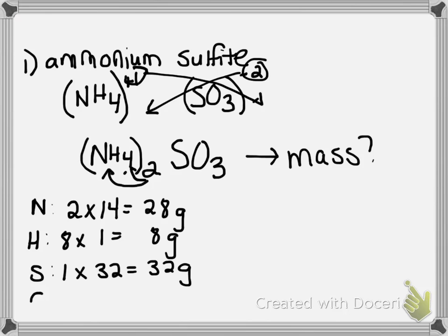And last but not least, oxygen. We have three oxygen atoms, and looking at the periodic table, oxygen has a mass of 16. So three times 16 will give us a mass of 48 grams. So now we have part of our answer completed. We have the masses for each individual element that makes up the compound.